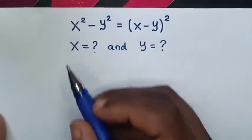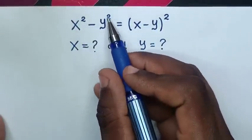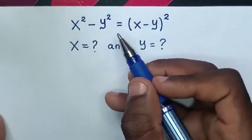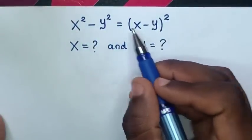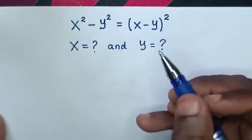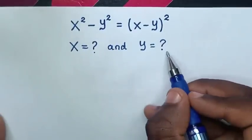Hello. How to solve x squared minus y squared is equal to x minus y bracket squared, to find the value of x and y.